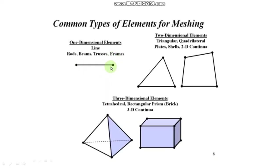One-dimensional element has two nodes. A basic example of one-dimensional element is truss structure, towers, etc.